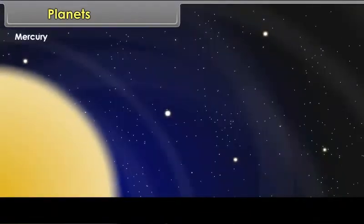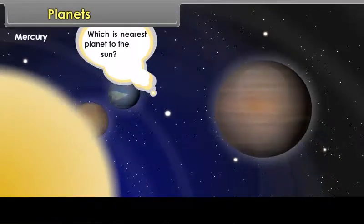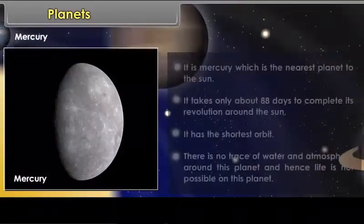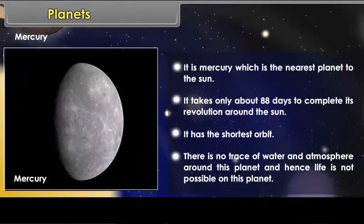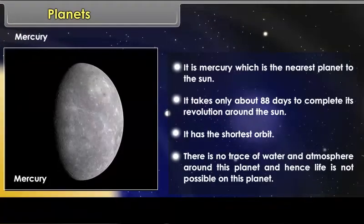Mercury. If you ask the question, which is the nearest planet to the Sun? It is Mercury, which is the nearest planet to the Sun. It takes only about 88 days to complete its revolution around the Sun. It has the shortest orbit.